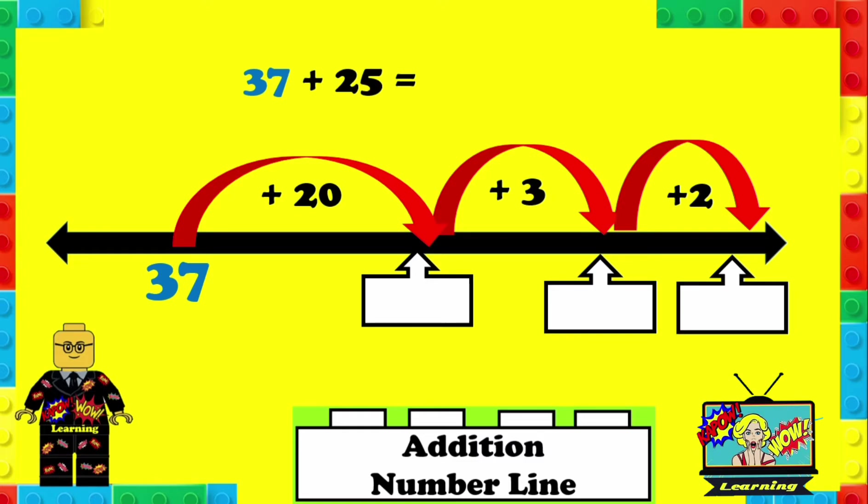We're going to start with 37, that's the biggest number, and we're going to split that 25 up. As you can see, we've added 20, so 37 plus 20 is 57. Now we've got a problem.